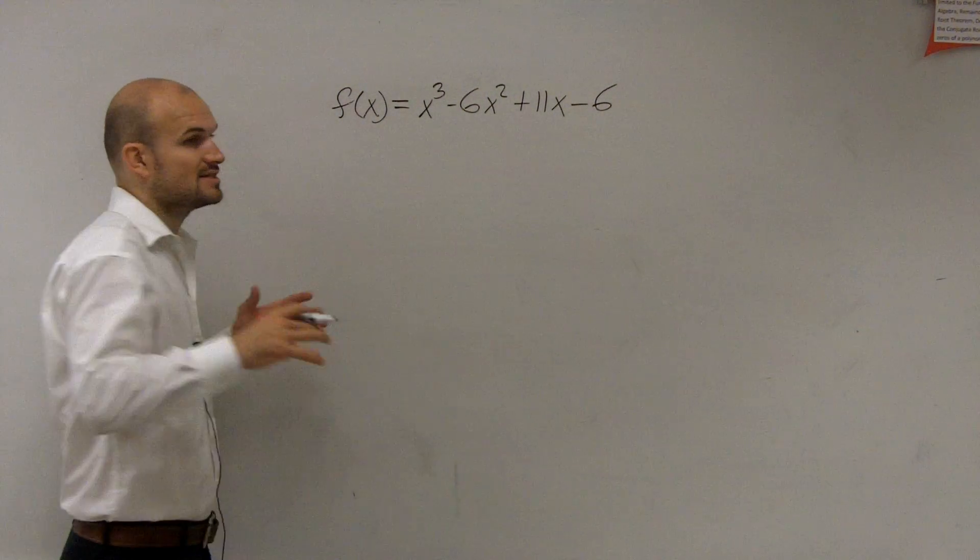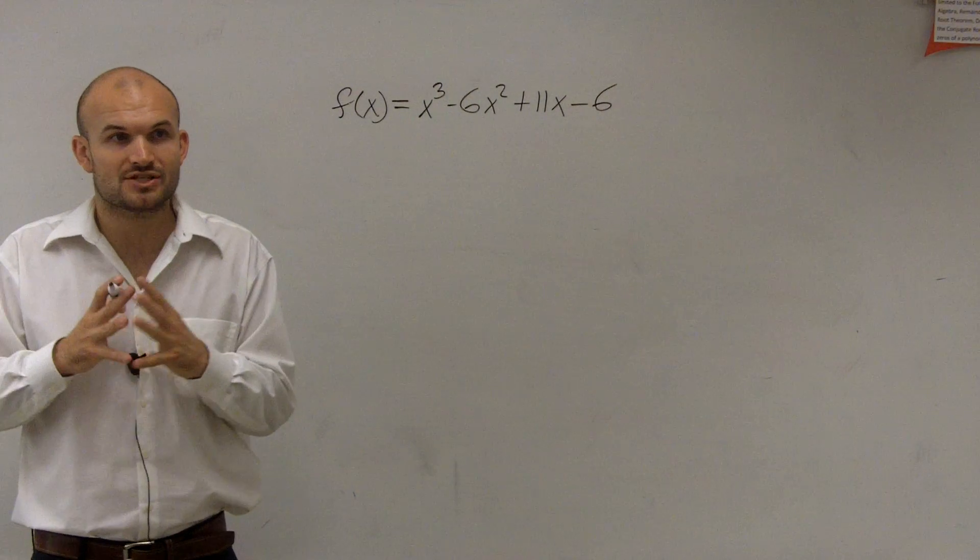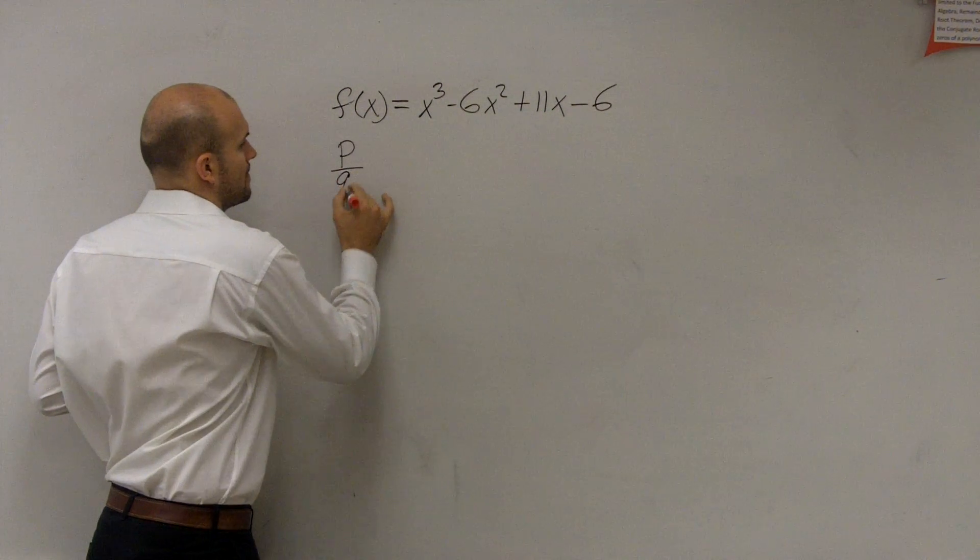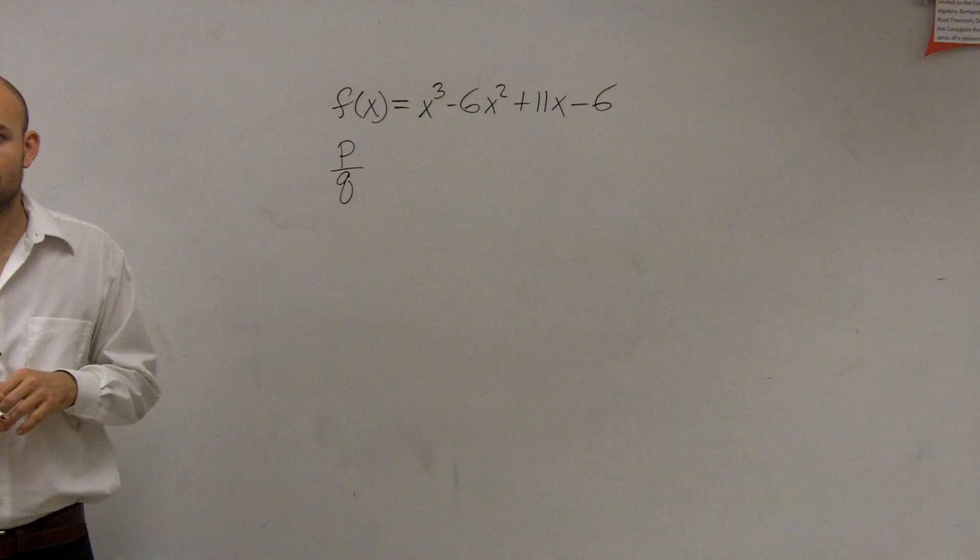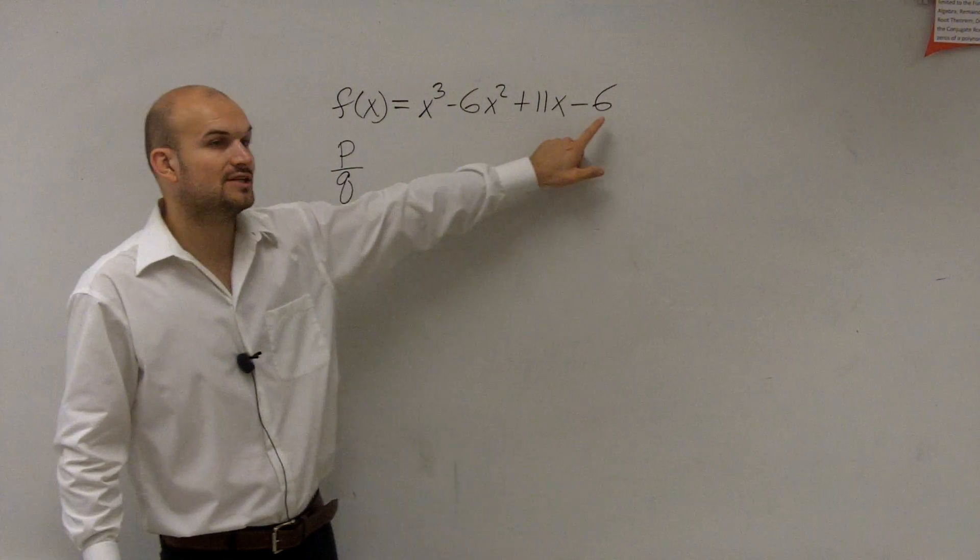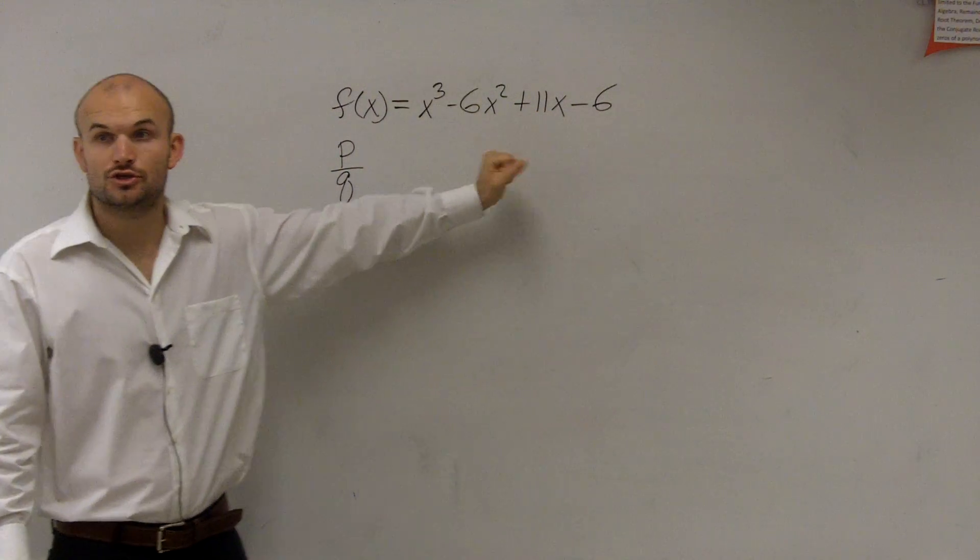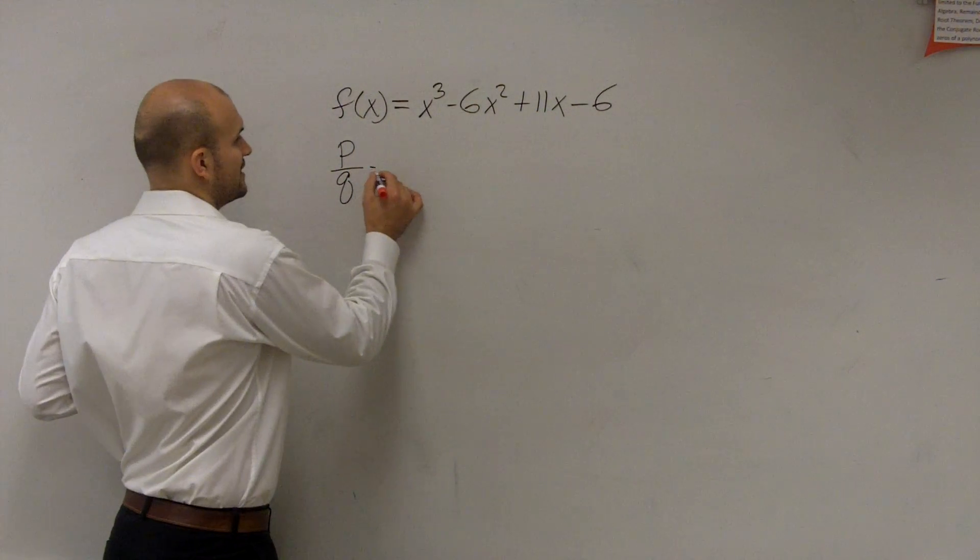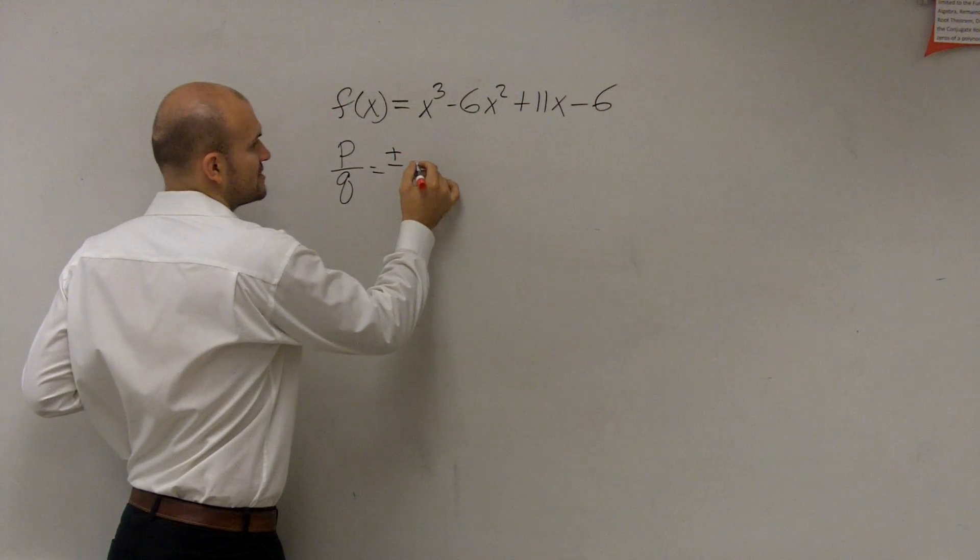And remember, the rational zero test says that all possible rational zeros can be written in the form of p divided by q. Remember, p is all the factors of your constant, q is all the factors of your leading coefficient. So what I have is plus or minus all the factors of 6,